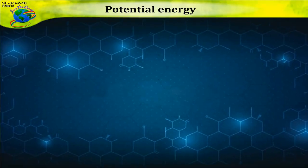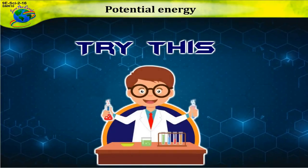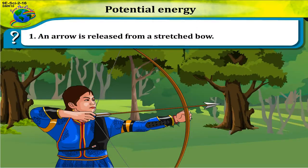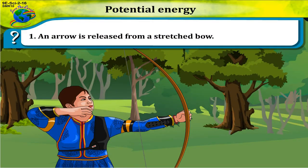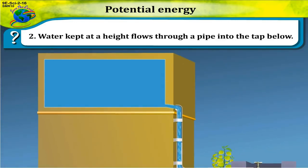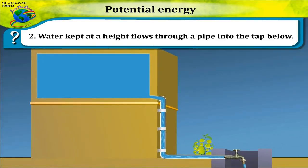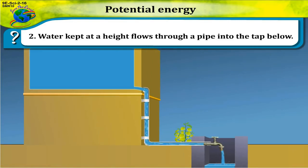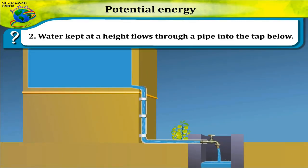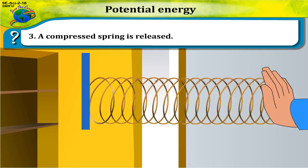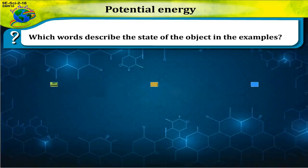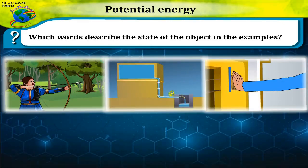An arrow is released from a stretched bow. Water kept at a height flows through a pipe into the tap below. A compressed spring is released. Which words describe the state of the object in the examples?